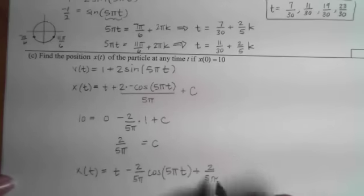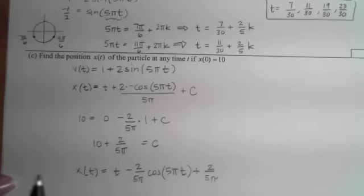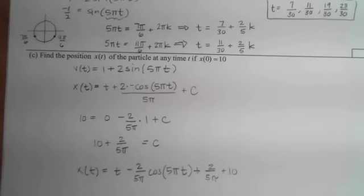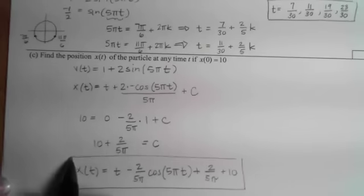Oops. Back up. I lost my 10 here. This should be 10 plus, so I should have an extra 10 in here. Sorry, for some reason I thought that was a 0. So here's my position function for all time.